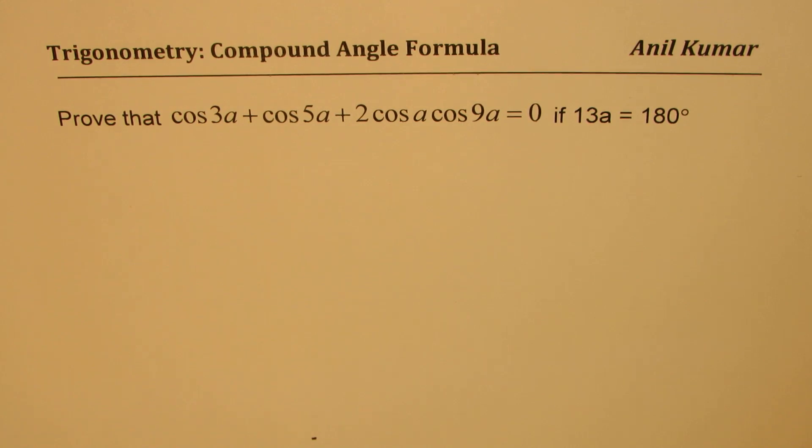We need to prove that cos 3a plus cos 5a plus 2 times cos a cos 9a equals 0 if 13a equals 180 degrees. You can always pause the video, answer the question and then look into my suggestions.